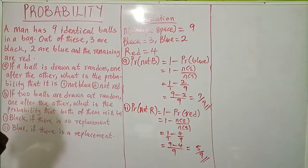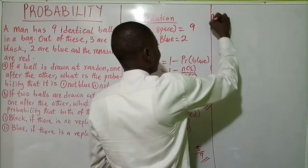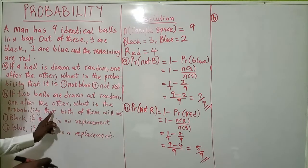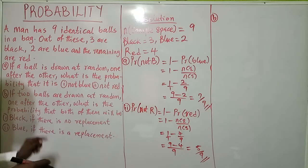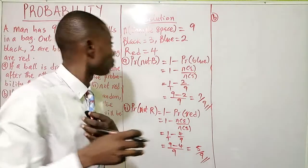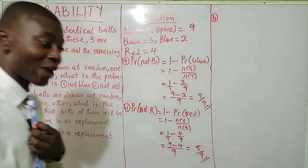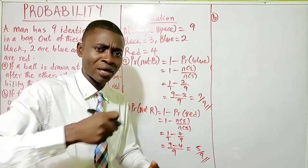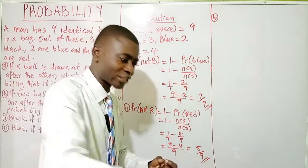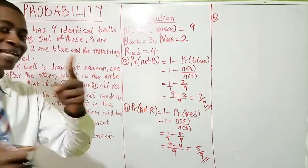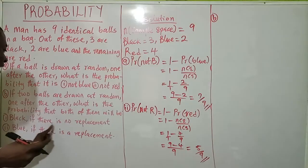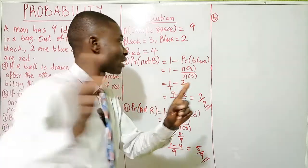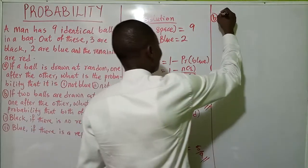Now let's take part b. It says if two balls are drawn at random one after the other, what is the probability that both of them will be black? That means two balls are drawn — you pick the first one and it's black, then you draw the second one and it's also black. Look at the condition: there is no replacement, meaning after I draw the first one, I do not put it back.